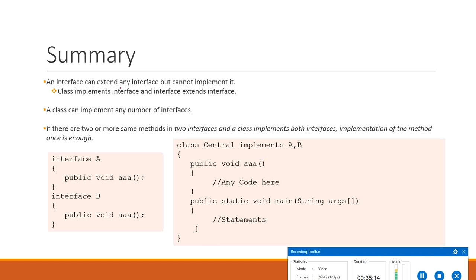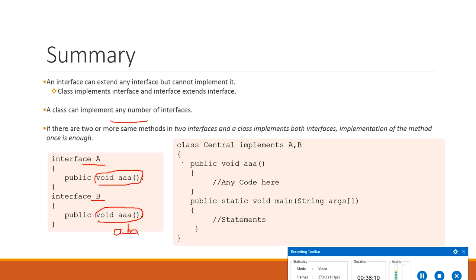An interface can extend any interface but cannot implement it — a class implements the interface. There is a difference between extending and implementing: in implementation, the class provides implementation to all methods. A class can implement any number of interfaces. If two interfaces have the same method and a class implements both, only one implementation is enough. To implement more than one interface: 'class ClassName implements Interface1, Interface2, Interface3' and so on.